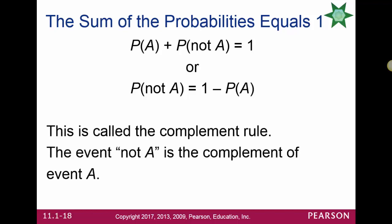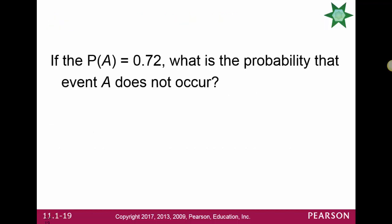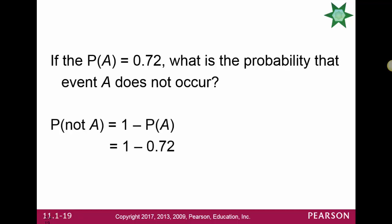The event not A is called the complement of event A. If the probability of A is 0.72, what's the probability event A does not occur? Using the complement rule, the probability of not A is 1 minus 0.72, which equals 0.28.